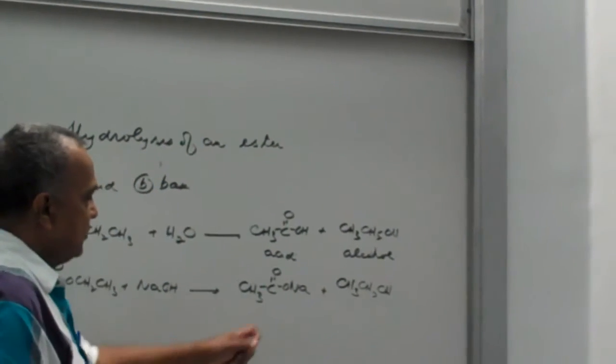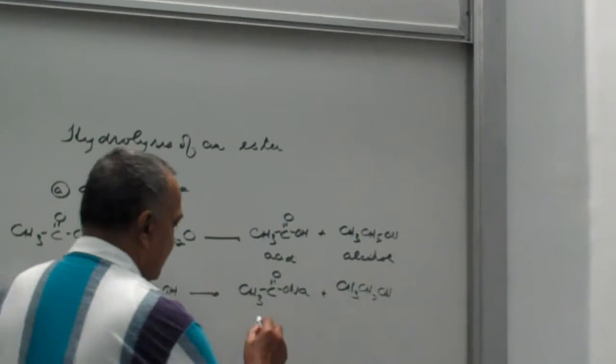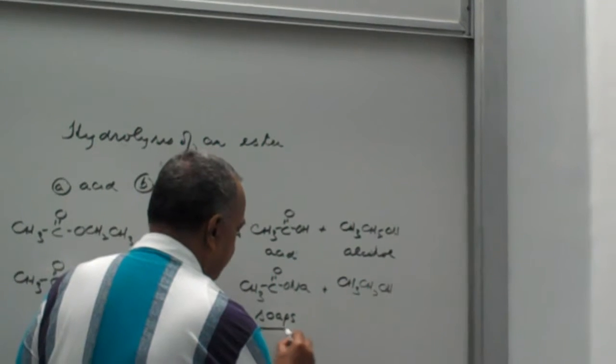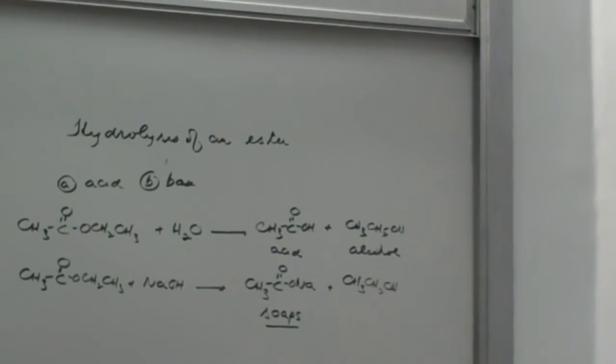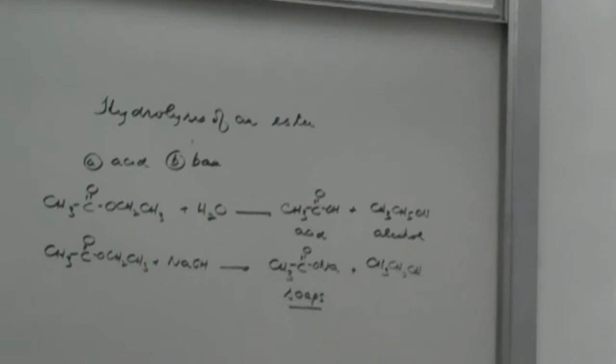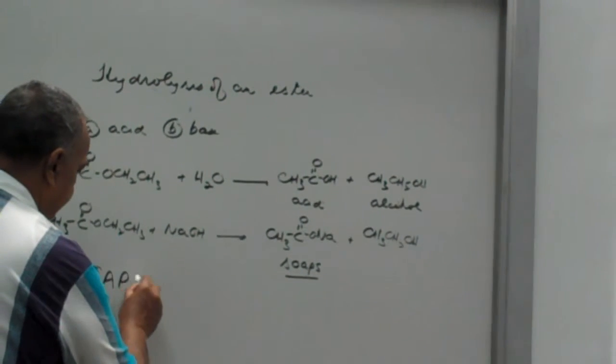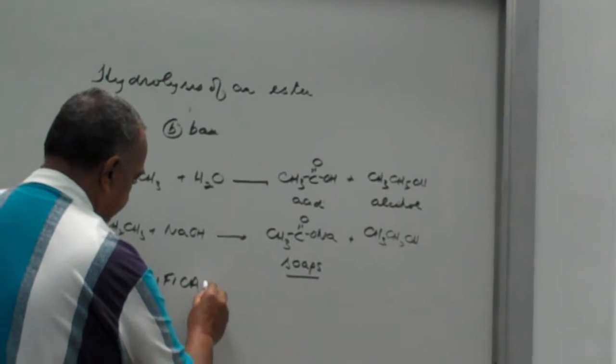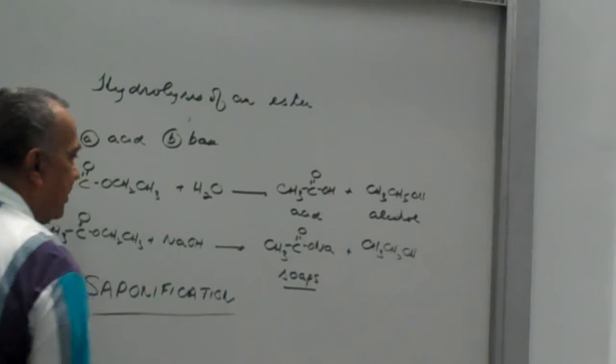And sodium salts of carboxylic acids are what we often refer to as soaps. And because of this, base hydrolysis of an ester is given a special name: saponification.